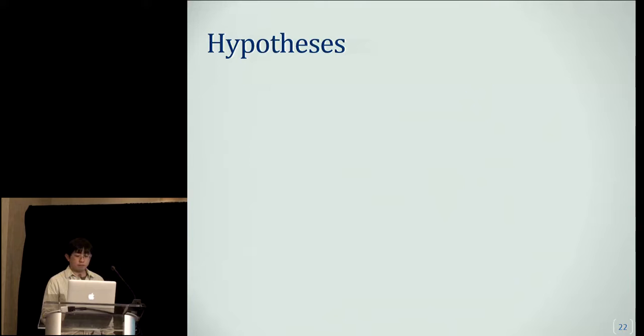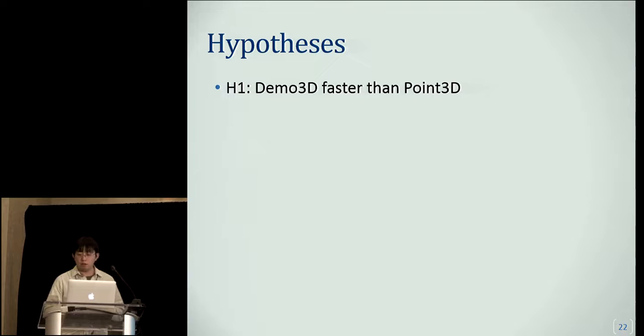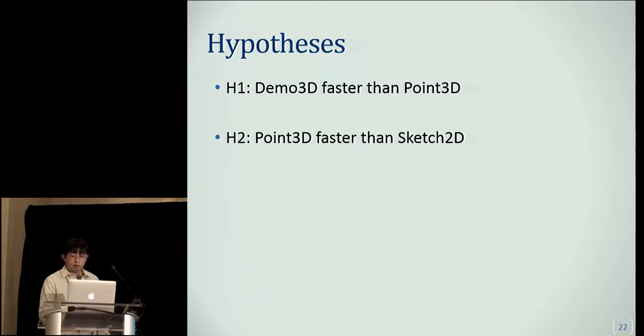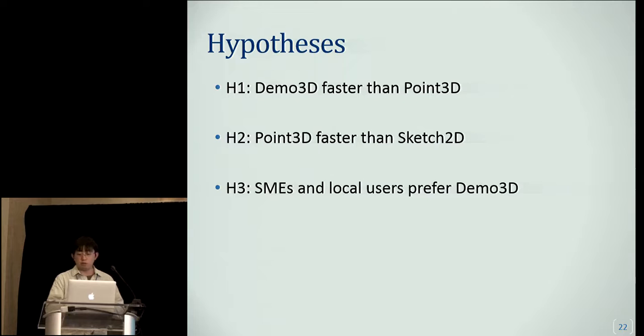Based on our pilot studies, we formulated three hypotheses. First, we expected Demo3D to be faster than Point3D because Point3D requires the SME to specify six contact points while Demo3D requires a single motion for demonstration, and because of the constraint, Demo3D will be quicker for the SME to precisely align the top part. Second, we expected Point3D to be faster than Sketch2D because Point3D uses bimanual interaction in 3D compared to 2D interaction on a tablet for a 3D task. Third, we expected both SMEs and local users to prefer Demo3D because the interaction is simple for the SME and it's easy for local users to match the demonstrated pose with the visual aids.